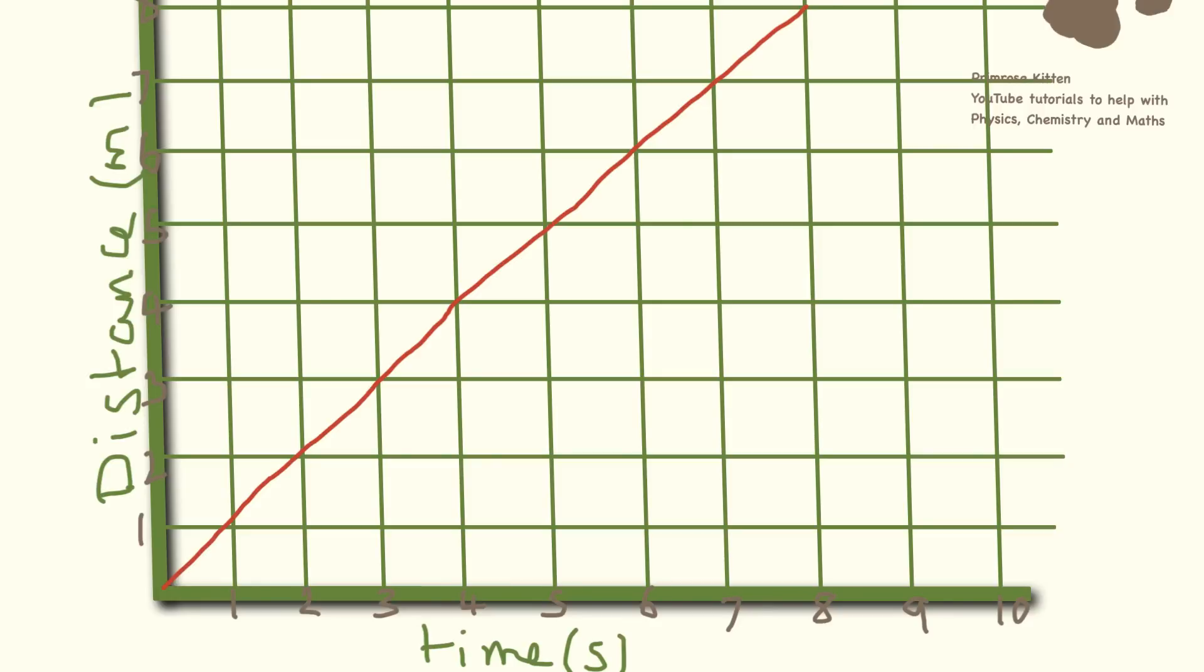This is what our distance-time graph is going to look like. We're going to have distance going on the side with our distance in meters, time going on the bottom in seconds. And you need to be able to recognize the lines in the graph and see what they're doing. So here we are going at a steady speed. We are increasing 1 meter every 1 second that we go. So if it's increasing proportionally, it is going at a steady speed.